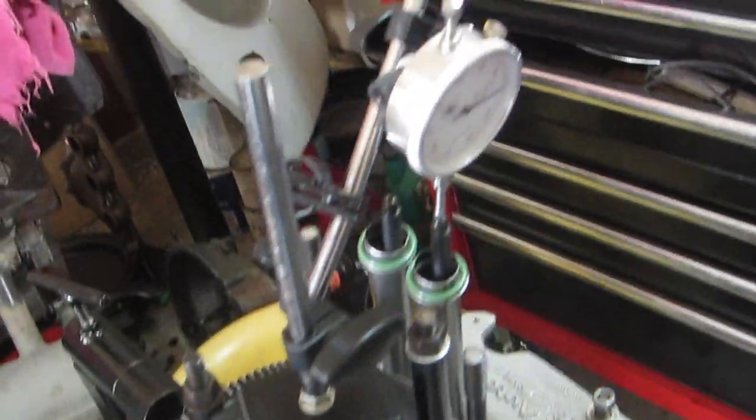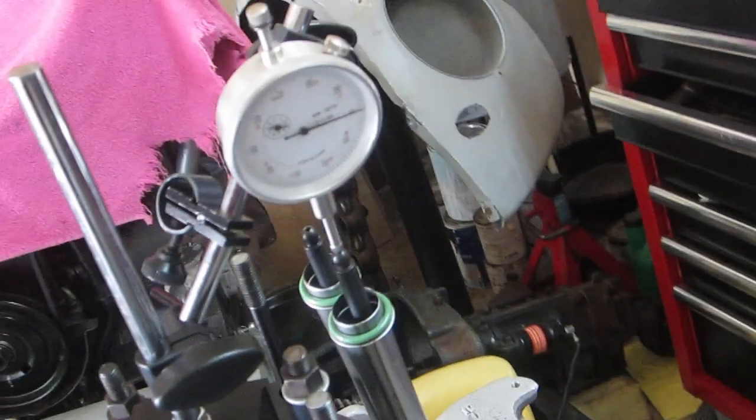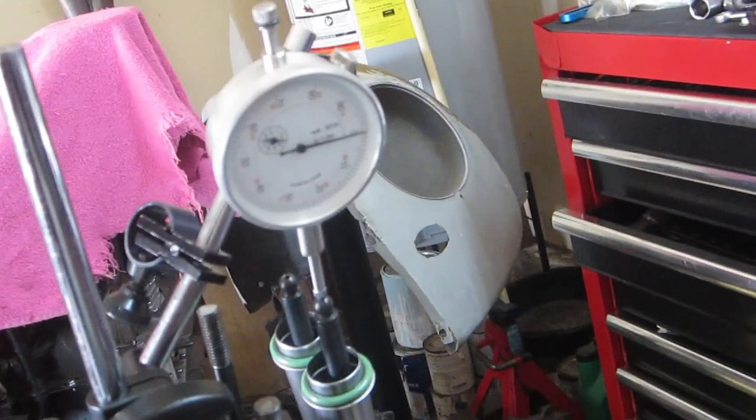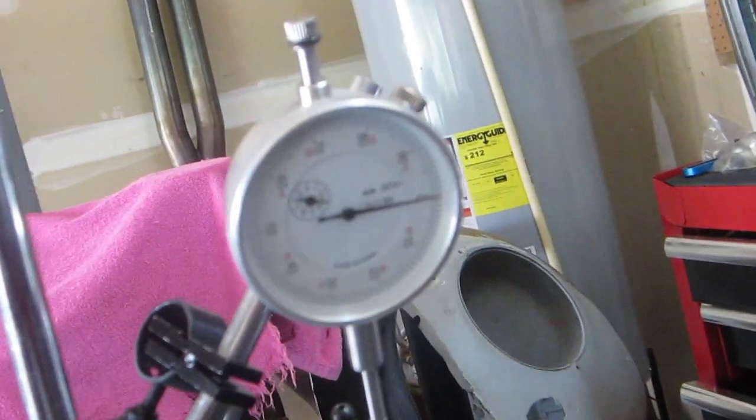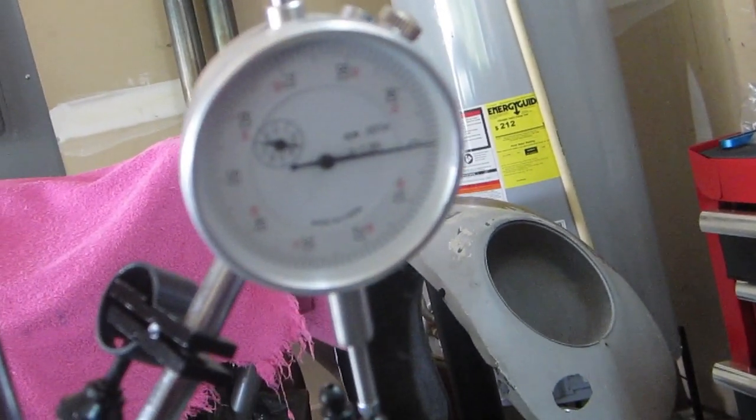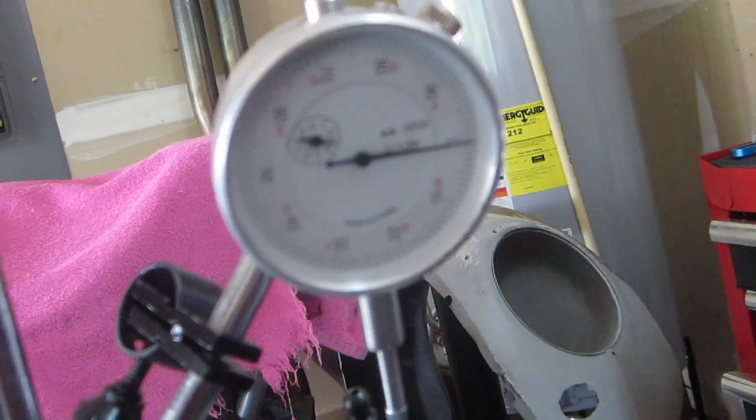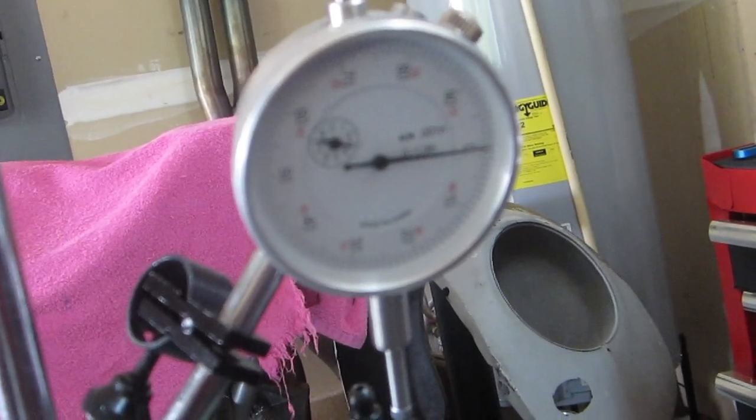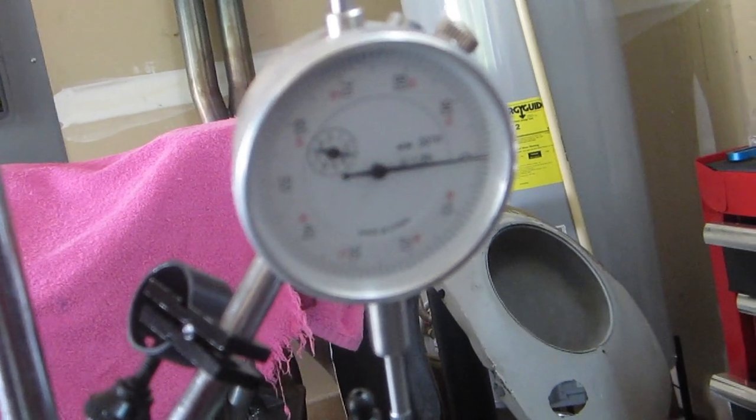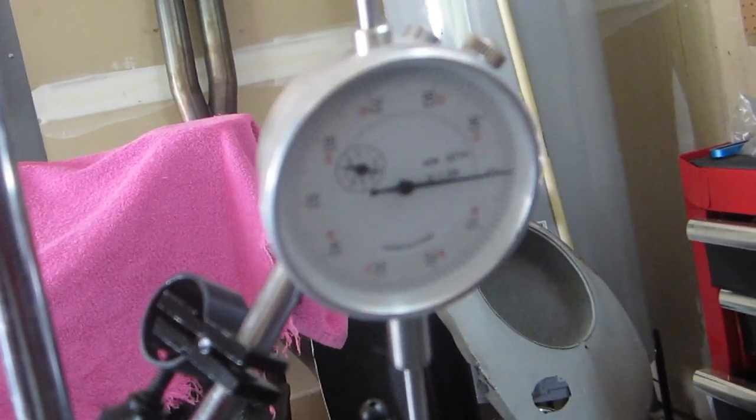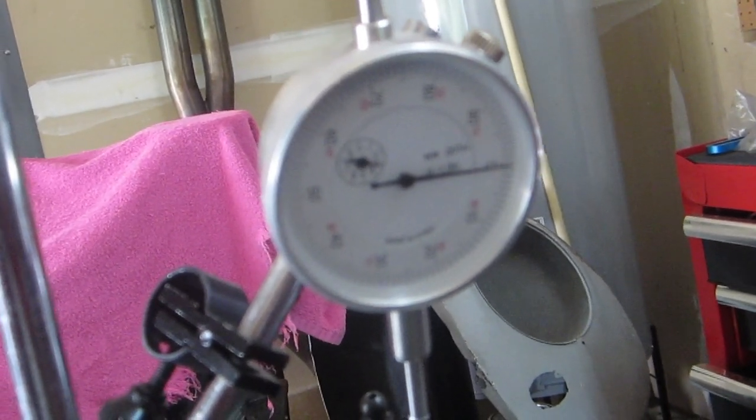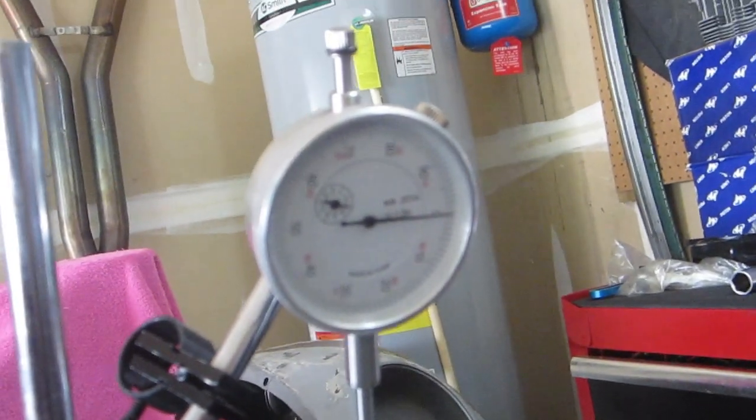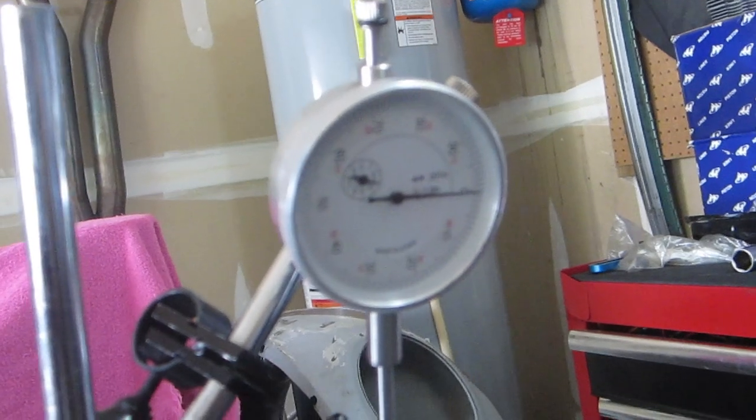Hey guys, I almost forgot. I should have checked and will do so now that I'm getting the at or near the lift called for on the cam card. It calls for 0.409 inches of lift. This is without the ratio rockers. With 1.4 rockers it should go up to 0.573. But let's check our lift at the cam.